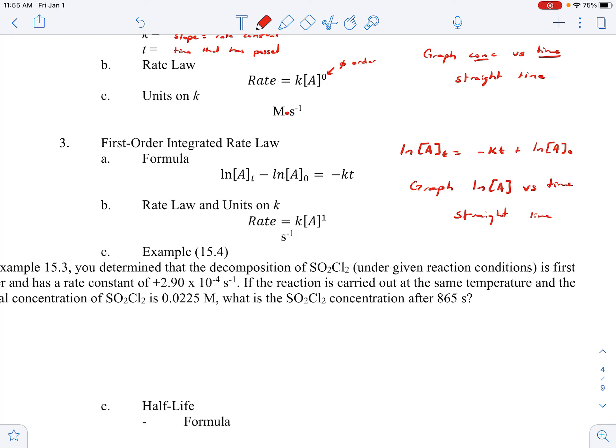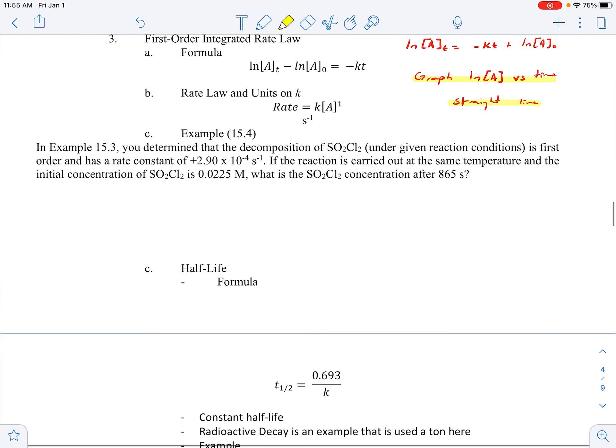Please remember that this is like the most important part right here. Yes, we can do some calculations with it like right here. So in Example 15.3, we determined that the decomposition is first order. It has a rate constant of positive 2.90 times 10^-4 s^-1. If the reaction is carried out at the same temperature and the initial concentration of SO₂Cl₂ is 0.0225 M, what is the SO₂Cl₂ concentration after 865 seconds? So we can just plug in and solve here. It doesn't ask us to graph anything, but it's very simple. We just use our formula right there.